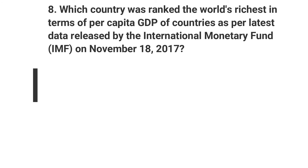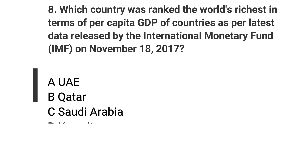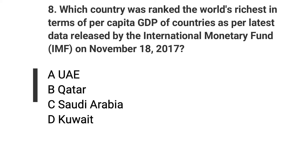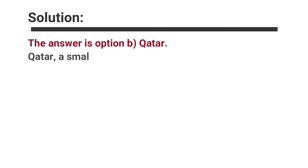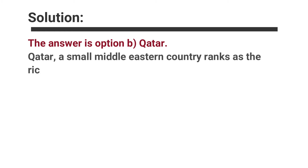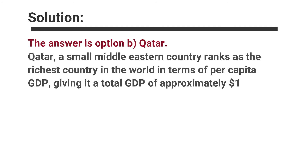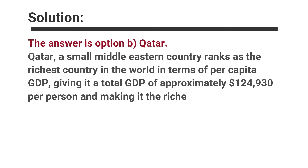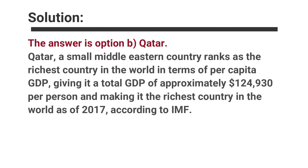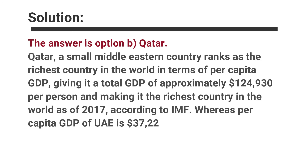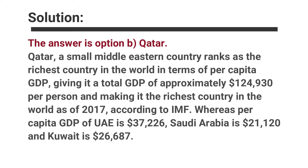Question number eight: Which country ranked as the richest in terms of per capita GDP as per the latest data released by the International Monetary Fund on November 18, 2017? Options are A. UAE, B. Qatar, C. Saudi Arabia, D. Kuwait. The answer is option B, Qatar. Qatar, a small Middle Eastern country, ranks as the richest country in the world as of 2017 by per capita GDP, approximately $24,930 per person, according to the IMF. The per capita GDP of UAE is $37,226, Saudi Arabia is $21,120, and Kuwait is $26,687.